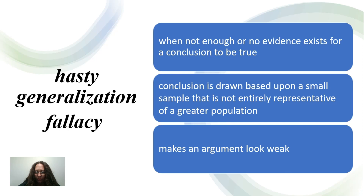The next type of logical fallacy is the hasty generalization fallacy. In this case, it draws a conclusion based on too little or insufficient evidence. This intellectual habit often surfaces in arguments about gender, race, age, sexual orientation, and even vocation.